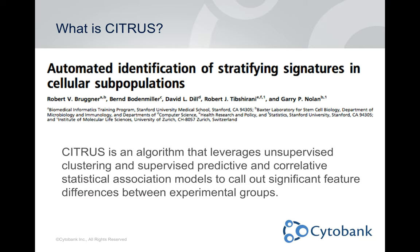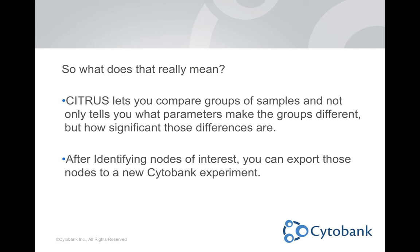So what is Citrus? Citrus was debuted by a paper from Rob Brugner et al. Basically, it's an algorithm that leverages unsupervised clustering and supervised predictive and correlative statistical association models to call out significant feature differences between experimental groups. Citrus lets you compare groups of samples and not only tells you what parameters make those groups different, but how significant those differences are. After identifying nodes of interest with Citrus, you can export the events in those nodes to a new Cytobank experiment for further analysis, either manually or with other algorithms.